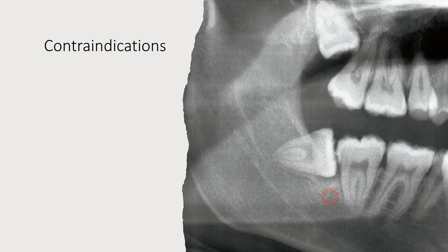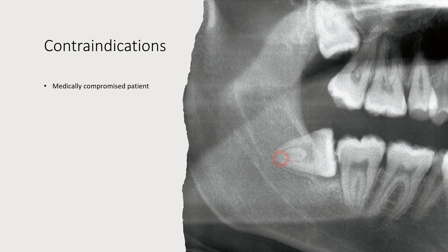There are many contraindications where we should not perform coronectomy and must proceed with traditional surgical extraction. As seen in this OPG section, a horizontally impacted third molar contraindicates coronectomy because while attempting to retrieve the roots, the nerve can be damaged. Medically compromised patients should not undergo coronectomy due to increased infection risk. In cases with associated periapical root infection, leaving the roots could lead to further infections.